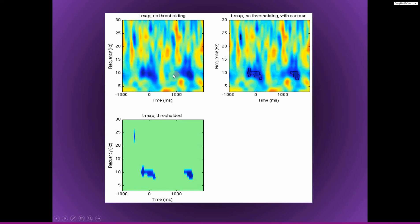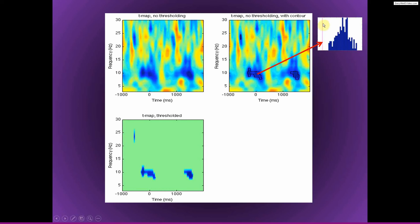The distribution at one time-frequency point can look different from another — different width, different mean — because the statistics are based on the characteristics of the data at that specific point. Here is a time-frequency map of power. I believe what I was testing is the first third of trials versus the last third. Thresholding at p = 0.05, you can see the regions where pixels exceeded the statistical criteria highlighted with black contours, and in another version of the map, all non-significant pixels are set to zero so only the significant results remain.